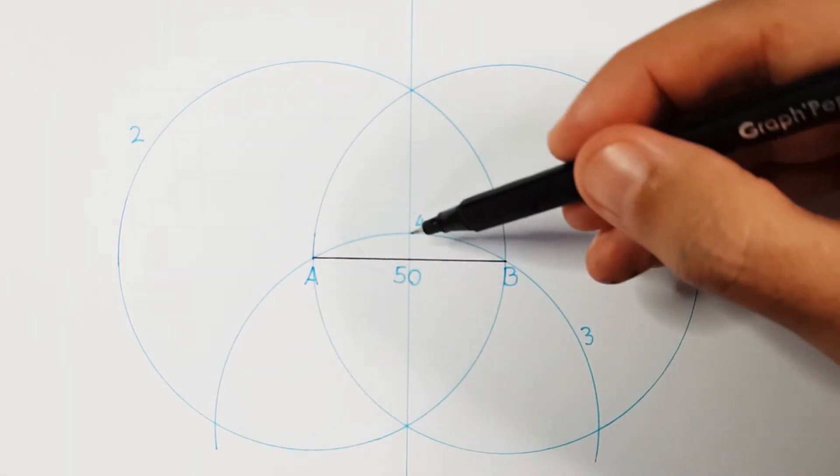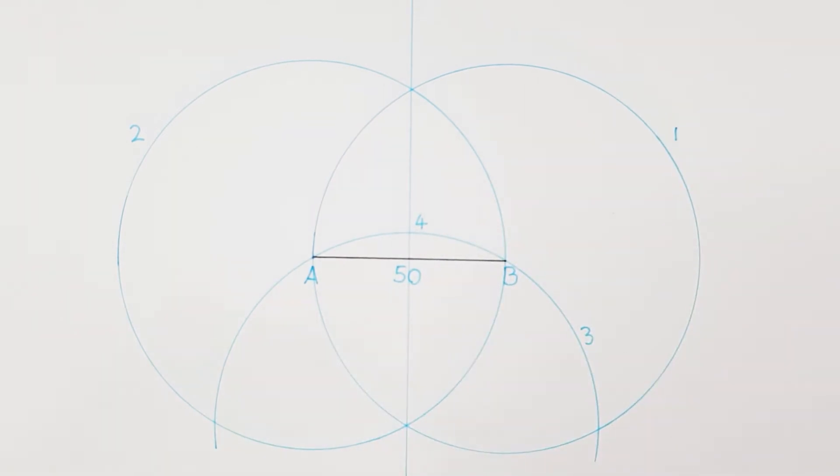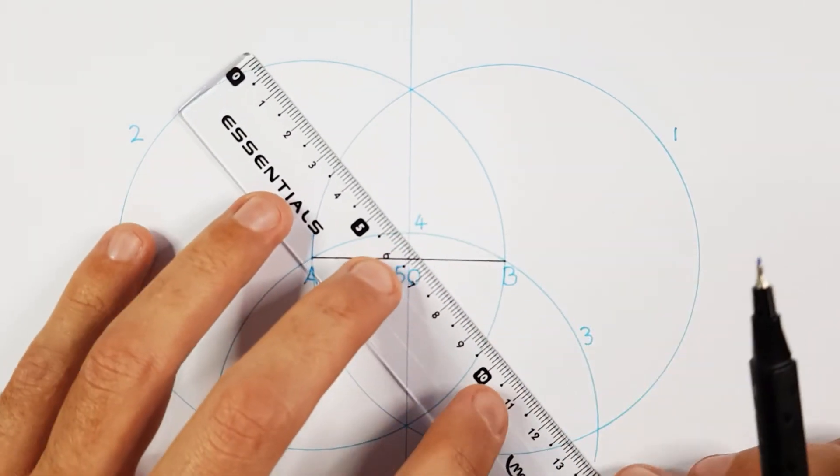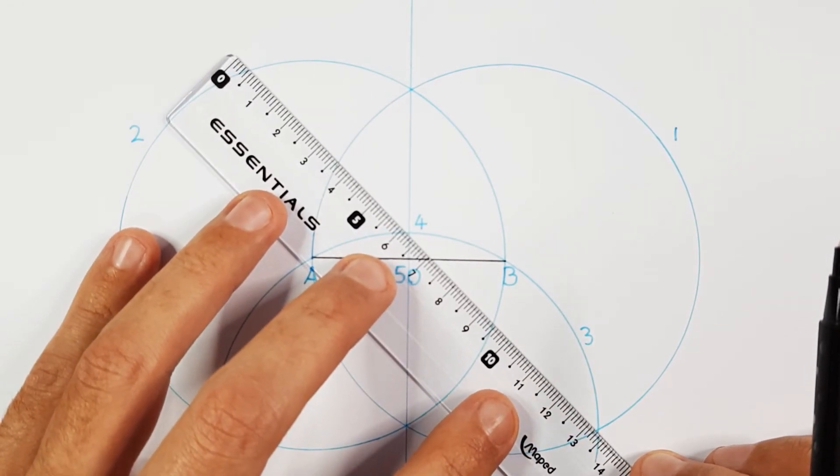With circle 3 creating two sectioning points at the bottom of circle 1 and 2, I now need to construct a line through these sectioning points through point 4 to section circle 1 and 2 at the top.